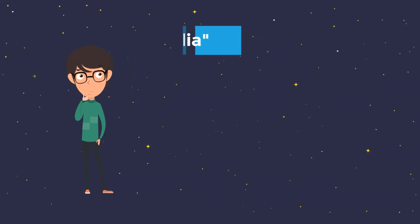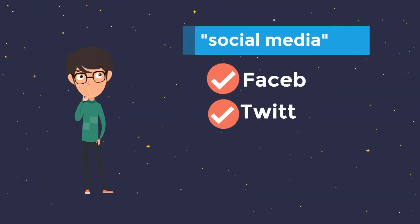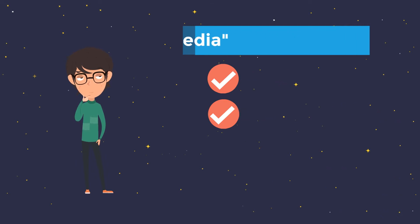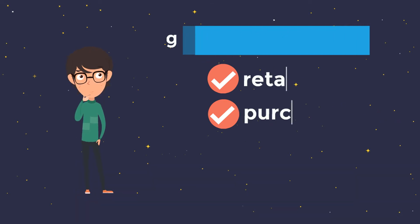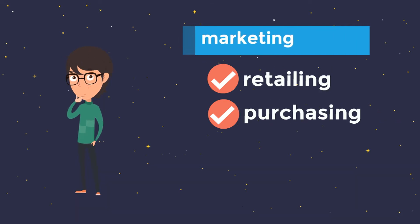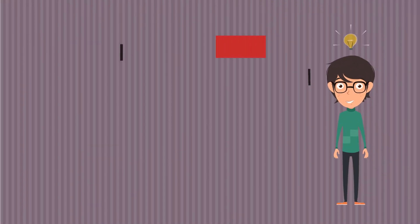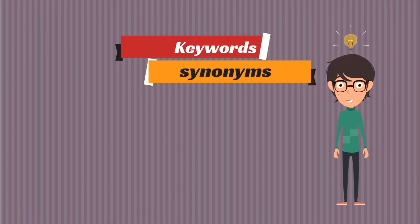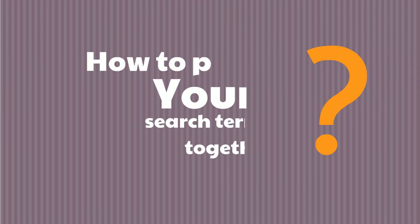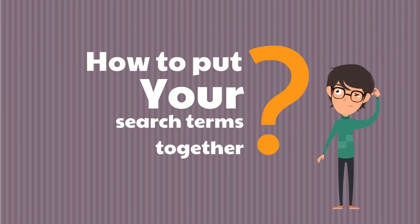From here, you can look for alternative terms that can also stand for your keywords. Once you have keywords and their respective synonyms, the question is: how do you put these terms together to make an efficient and effective search?